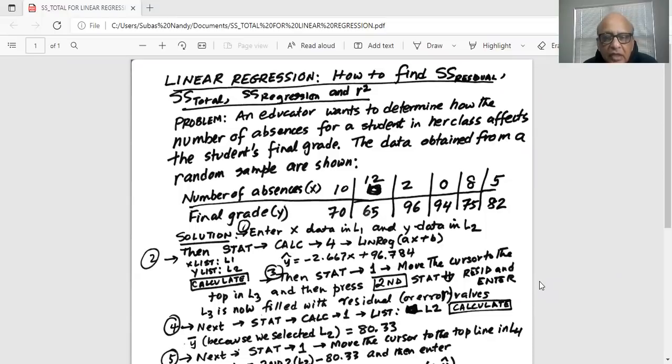The first thing we will do is enter x data in L1 and y data in L2. Then we will do STAT, CALC, 4 for linear regression ax plus b, x list is L1, y list is L2, and we will calculate. We will calculate the least square regression line equation, which is y hat, that means predicted y, is minus 2.667 times x plus 96.784.